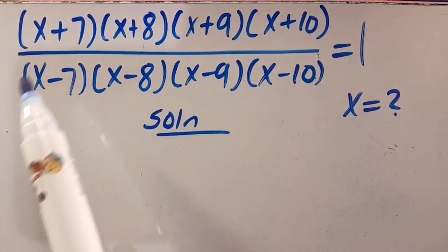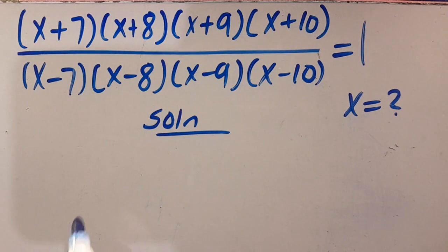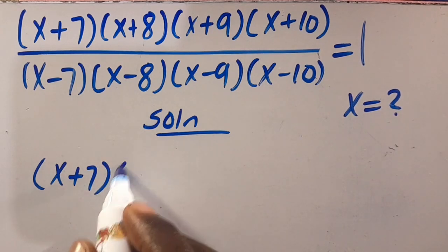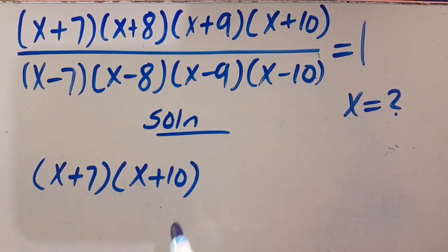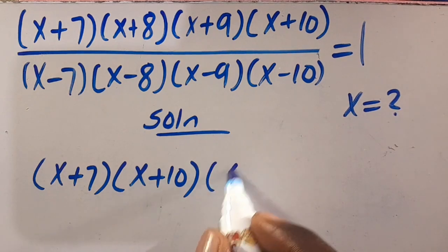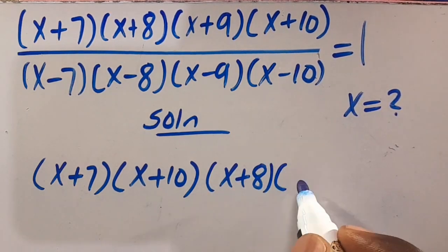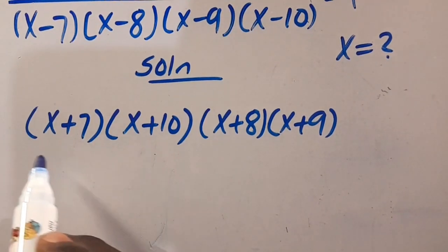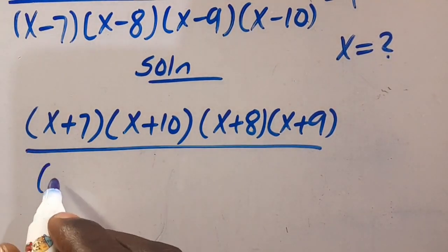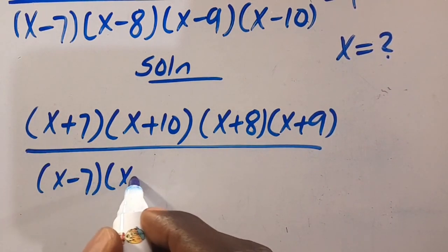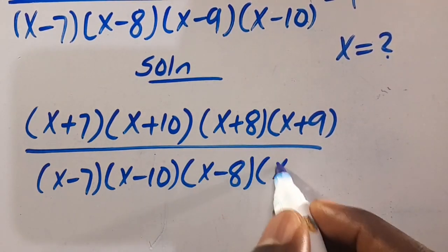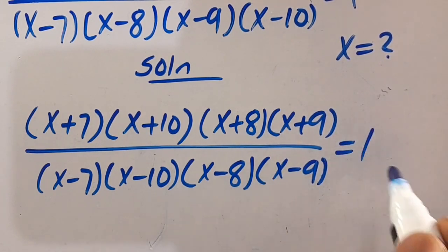So let's take this and this together. We are going to have x plus 7, all in brackets, multiplied by x plus 10. Let's pick this and this together as x plus 8 multiplied by x plus 9, all in parentheses. Then let's arrange the numerator as well: x minus 7, x minus 10, x minus 8, x minus 9. Then we set everything to equal 1.